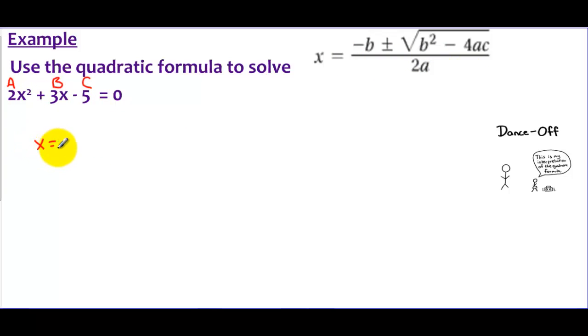I'm going to say x equals and start filling in values. I'm going to say negative 3—this is a plus or minus symbol we've seen. Underneath the radical, I have B squared, which is 3 squared, minus 4 times 2 times negative 5. Don't forget the negative sign when you plug in C, and it's all over 2 times 2, because my A value is 2.